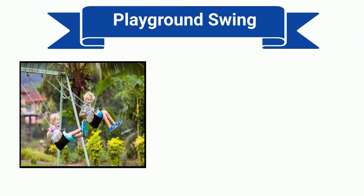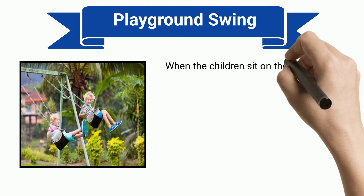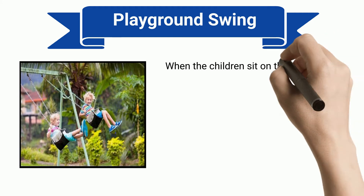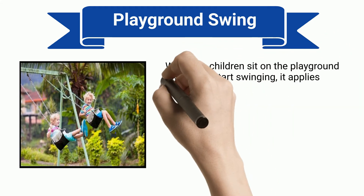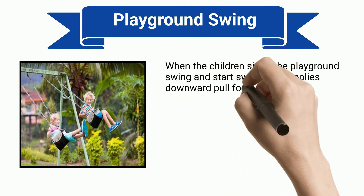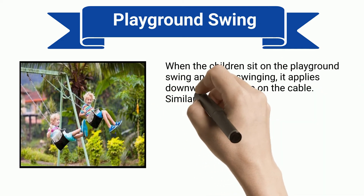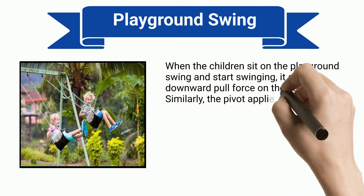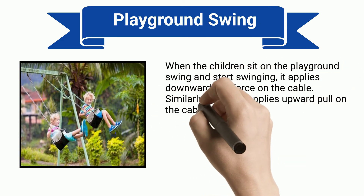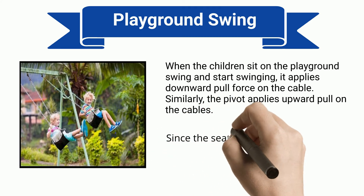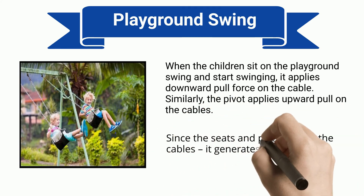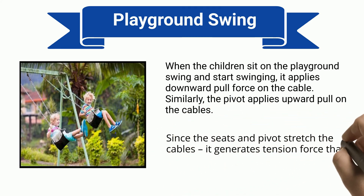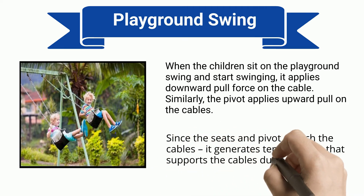Playground Swing. When the children sit on the playground swing and start swinging, it applies a downward pull force on the cable. Similarly, the pivot applies an upward pull on the cables. Since the seats and pivot stretch the cables, it generates tension force that supports the cables during swinging.